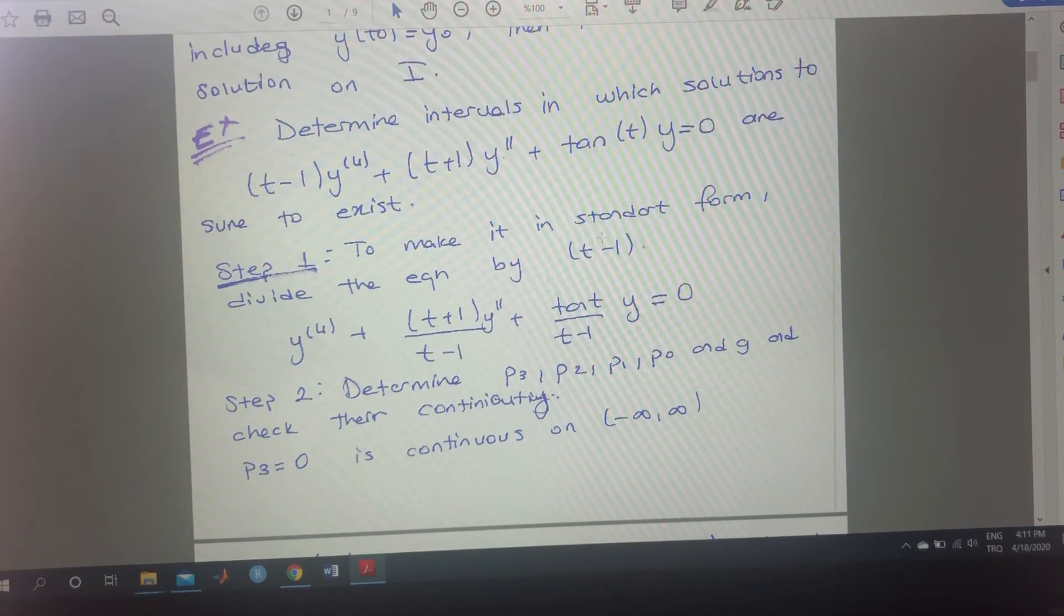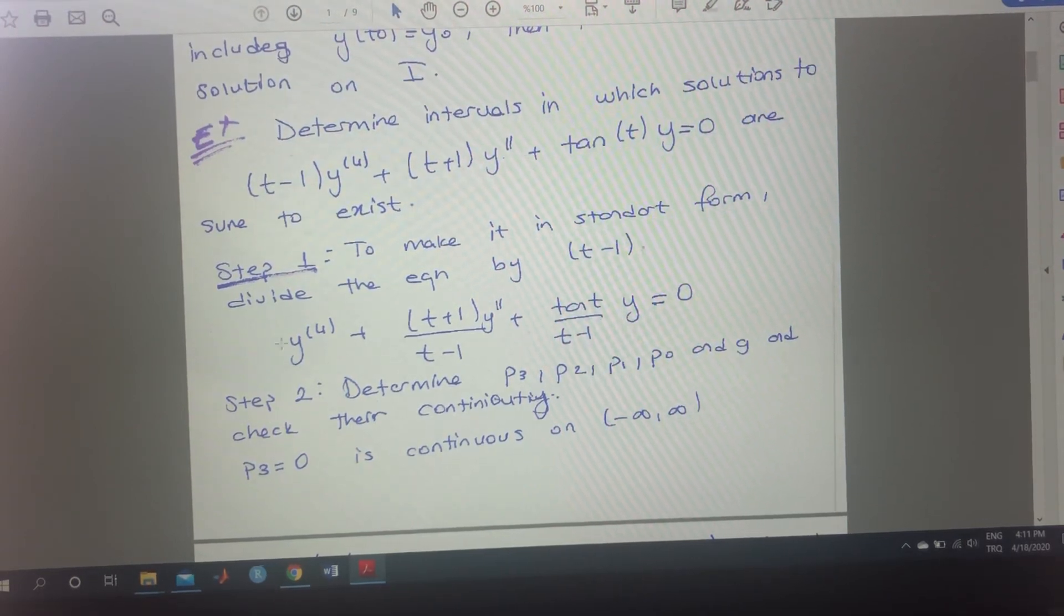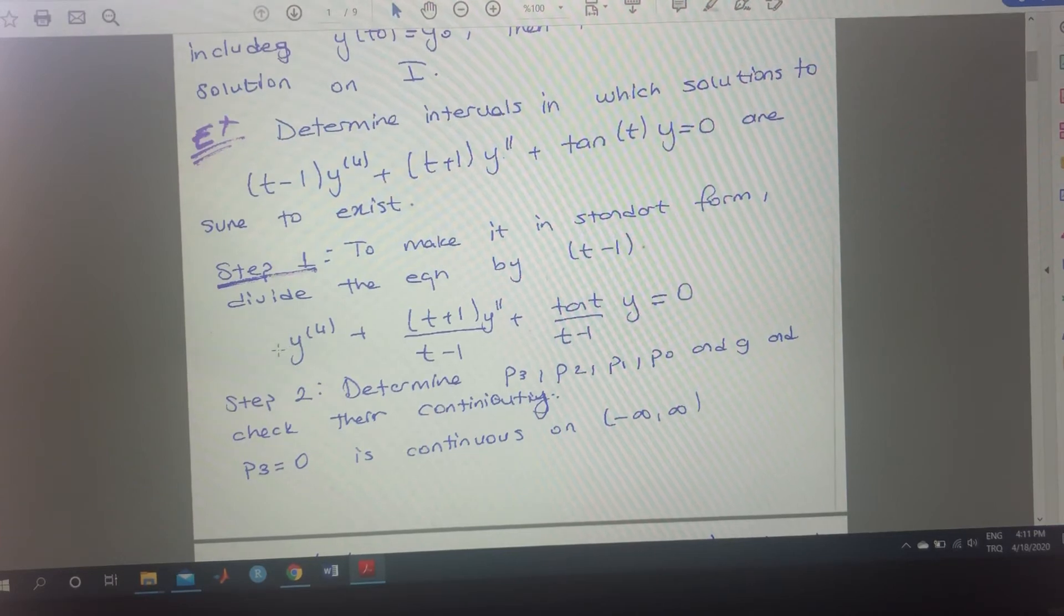t plus 1 over t minus 1, tangent t over t minus 1, equals 0. And here the coefficient of y to the 4 is 1 because we divided it by t minus 1.